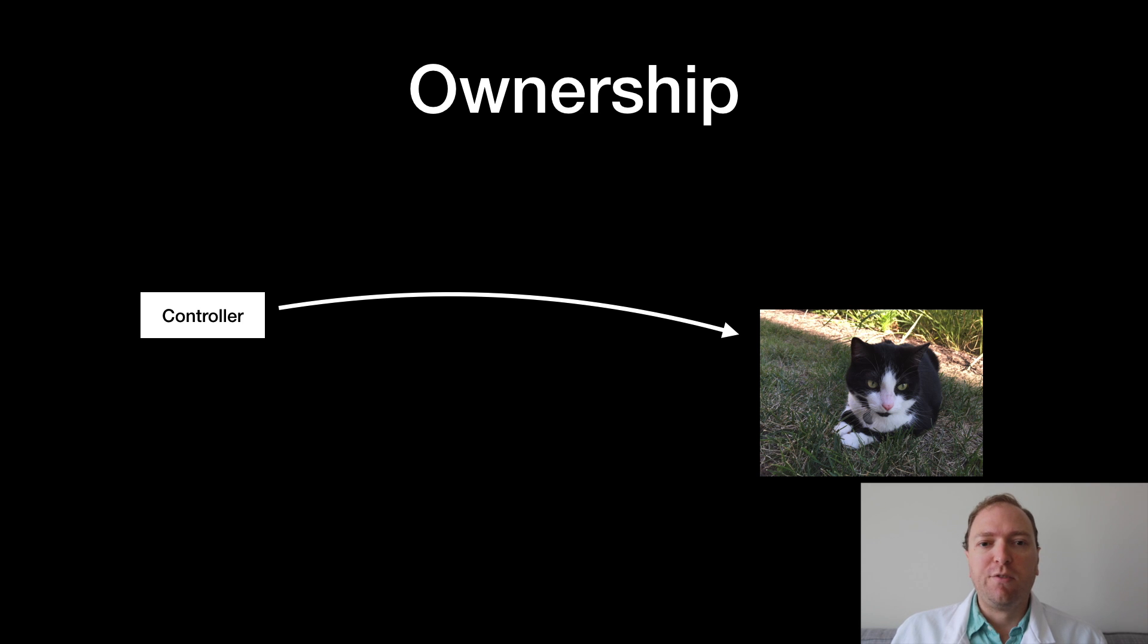One way to handle this is with object ownership. Every object gets assigned an owner. For example, here the controller owns the cat picture. And when the owner is destroyed, then the cat picture also gets destroyed.